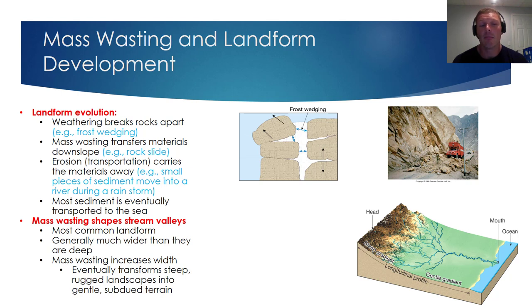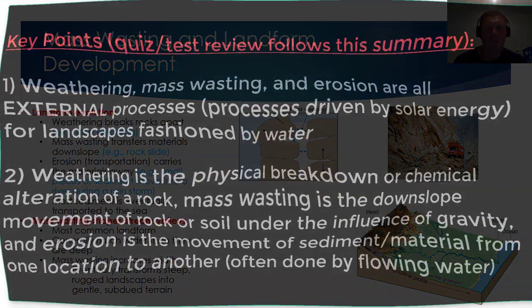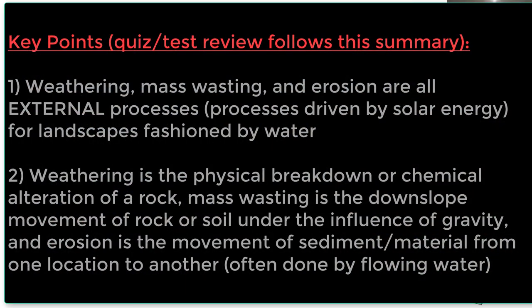The take-home point is that over time the three external processes — weathering, mass wasting, and erosion — work synergistically to reshape Earth's surface. That concludes the first vodcast for chapter 3. I hope this video helped you develop a good understanding of weathering, mass wasting, and erosion. In our next video podcast we're going to take a look at the water cycle, which will help us understand how water does what it does when shaping Earth's surface.